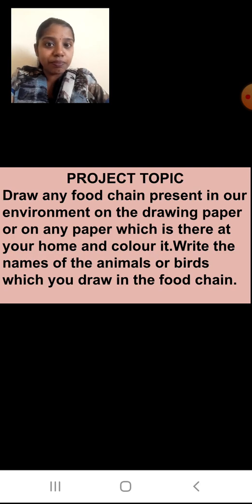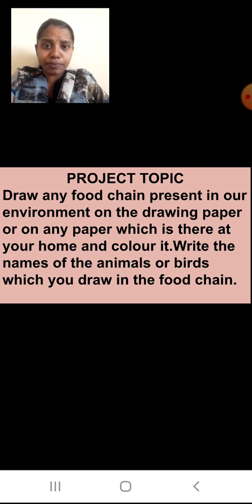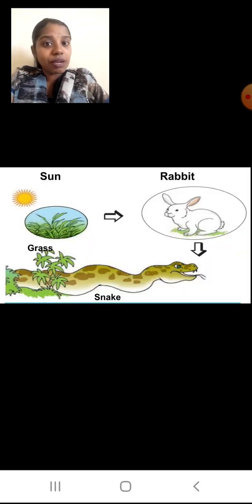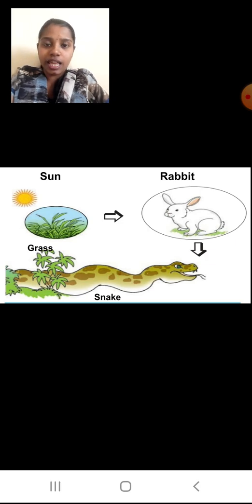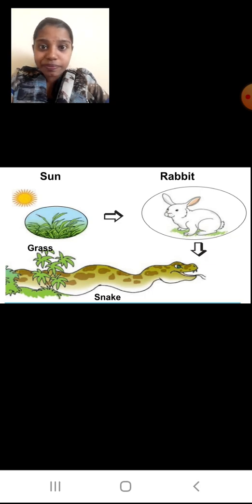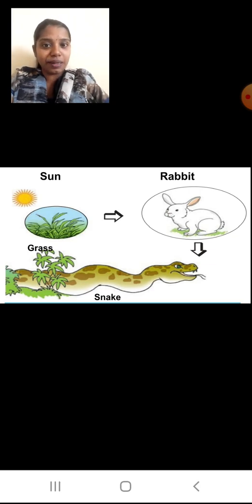I will show you an example of how to draw the food chain. You are going to draw it on the drawing paper or any paper. See, this is my first food chain example. I have given the label 'sun.' You know the sun is going to come in all food chains because the sun is your major source of energy. Without sun, plants cannot make food, so the sun is important. In your food chain also, you are going to draw the sun.